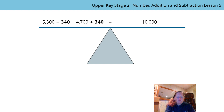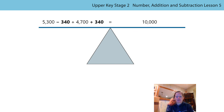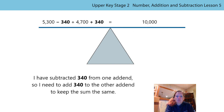But before we look at some problems, what do you notice here? Here I've shown the redistribution. I've shown the subtraction of 340 from one addend and I've shown the addition of 340 to the other addend. The balance has stayed level, which means the sum of this side is going to be equal to the value of the number on this side. I've subtracted 340 from one addend, so I need to add 340 to the other addend so I can keep the sum the same.